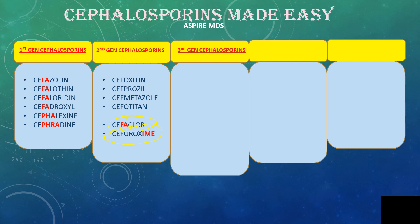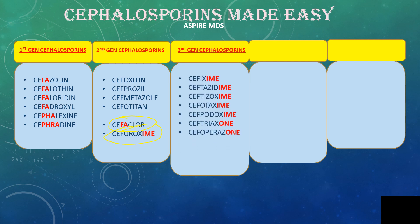Third generation Cephalosporins have endings with IME, 1, or 10. The drugs in this group include Cefixime, Ceftazidime, Ceftizoxime, Cefotaxime, Ceftriaxone, Cefoperazone, and Ceftibuten. Two additional names that don't follow the pattern are Cefdinir and Moxalactam.